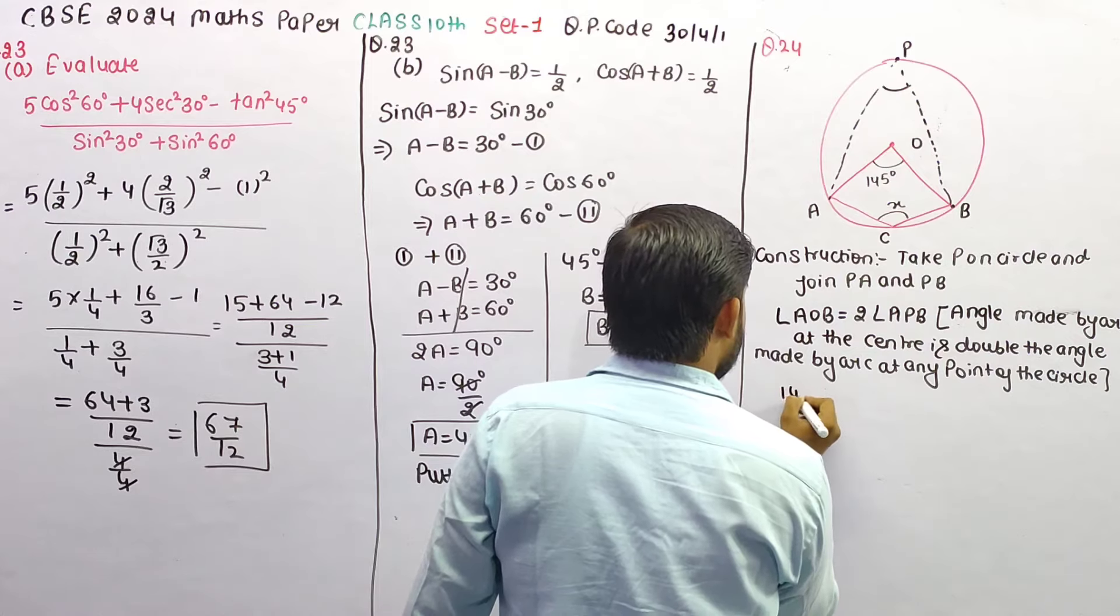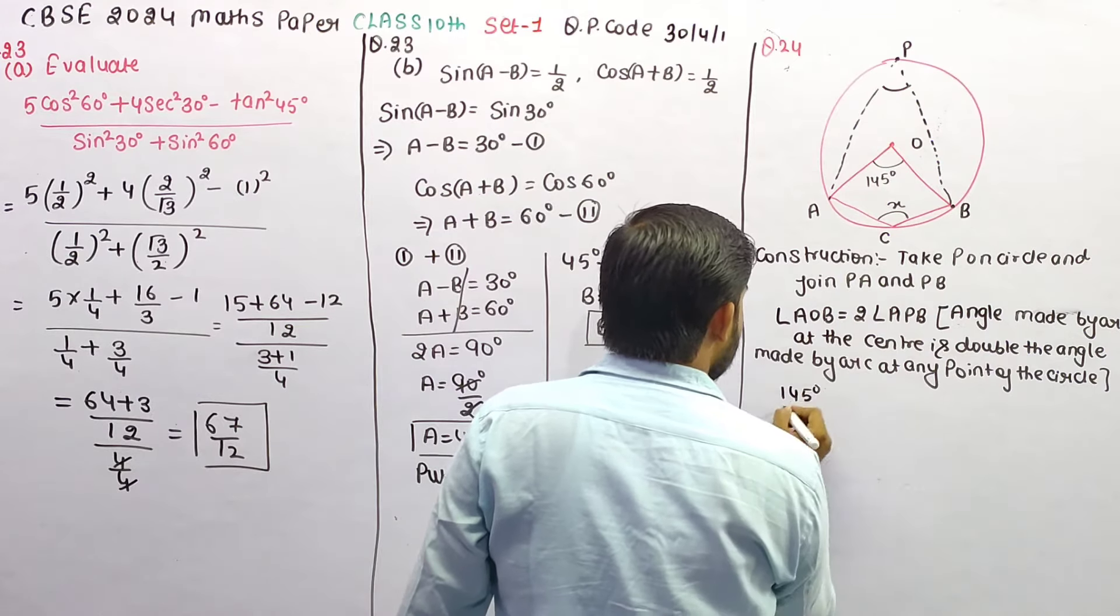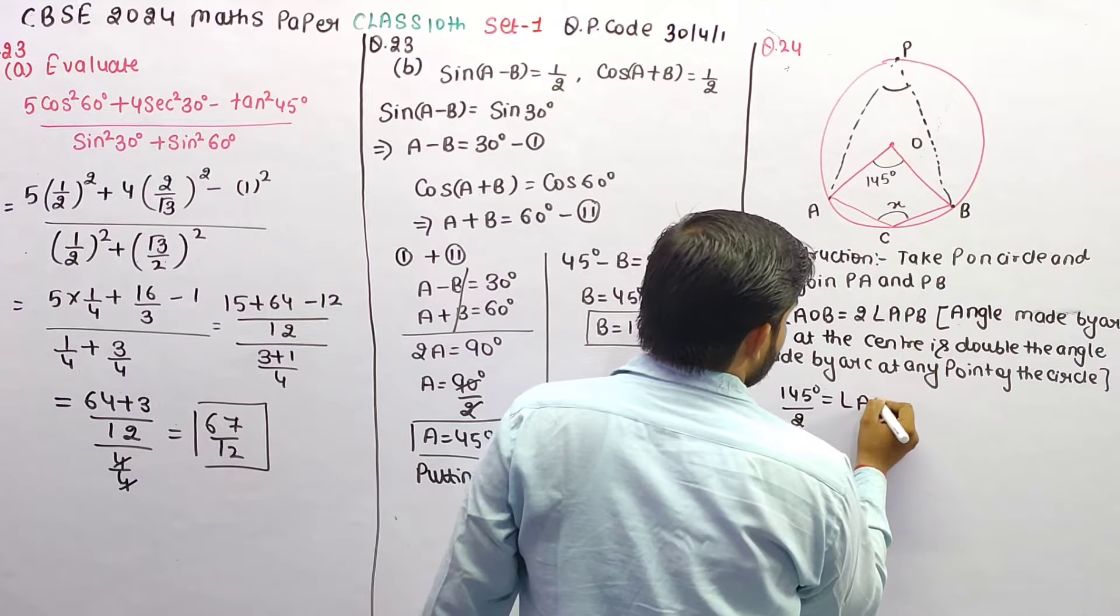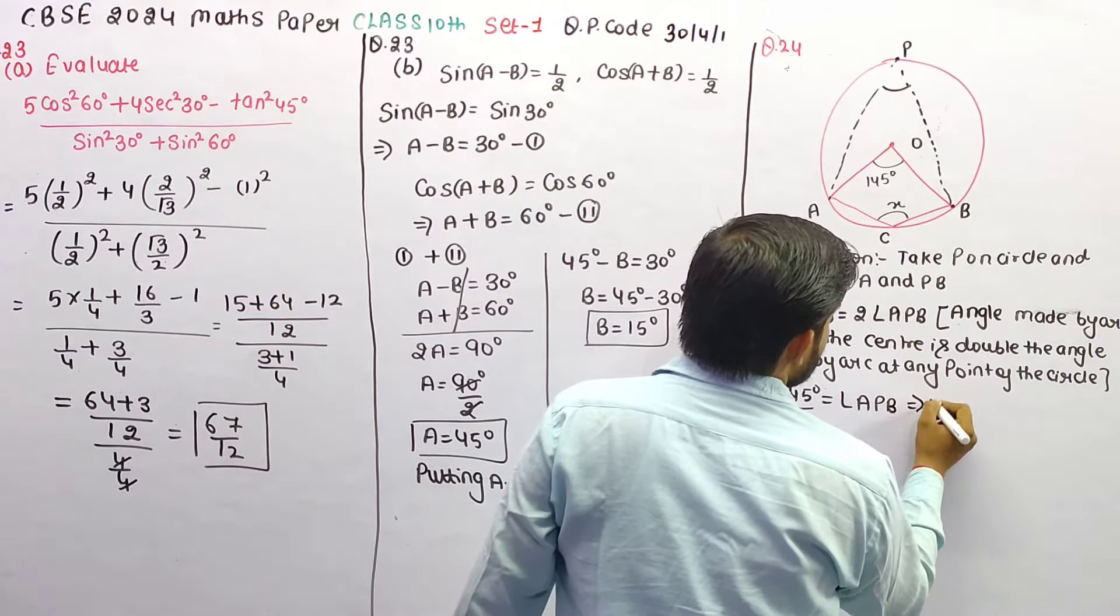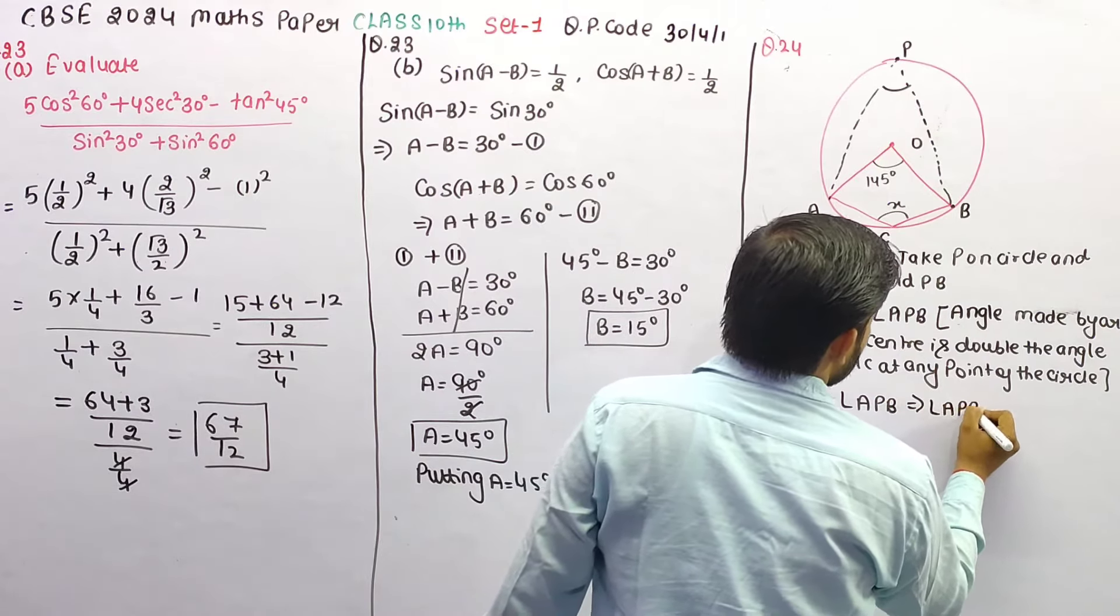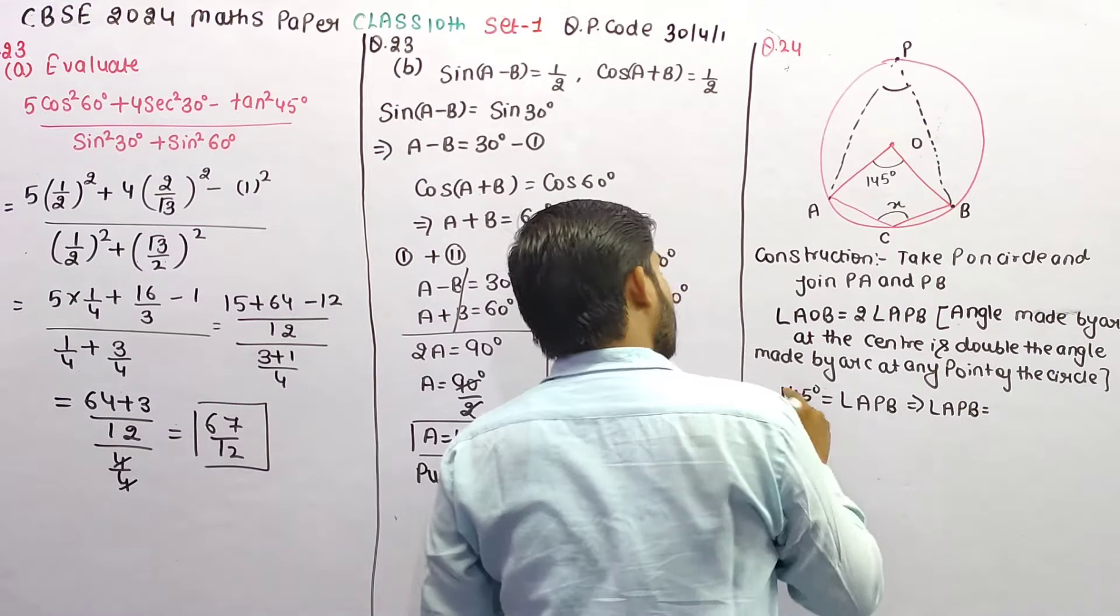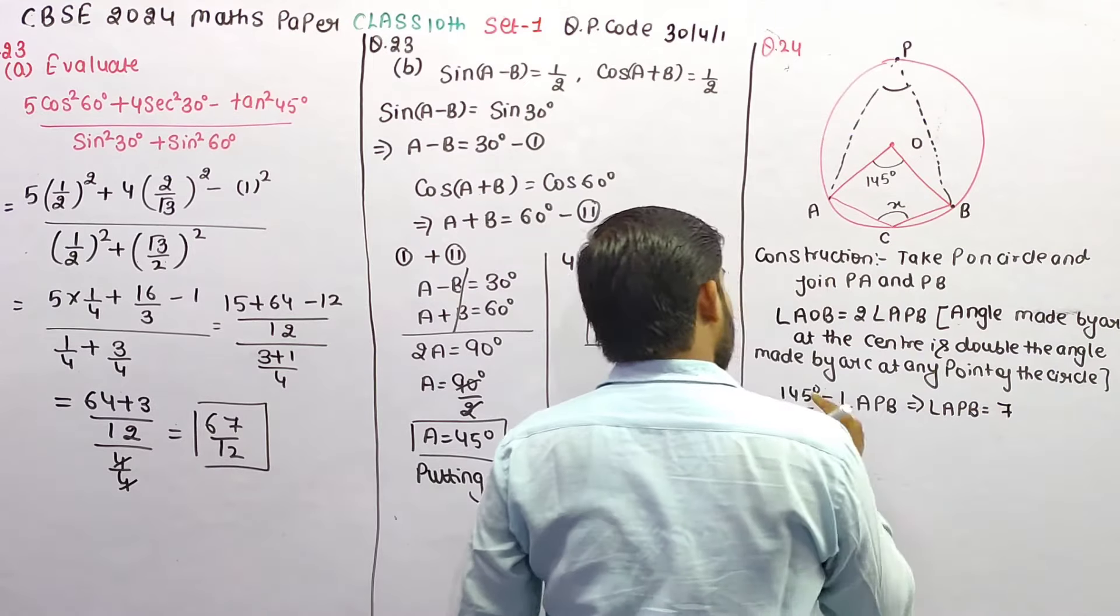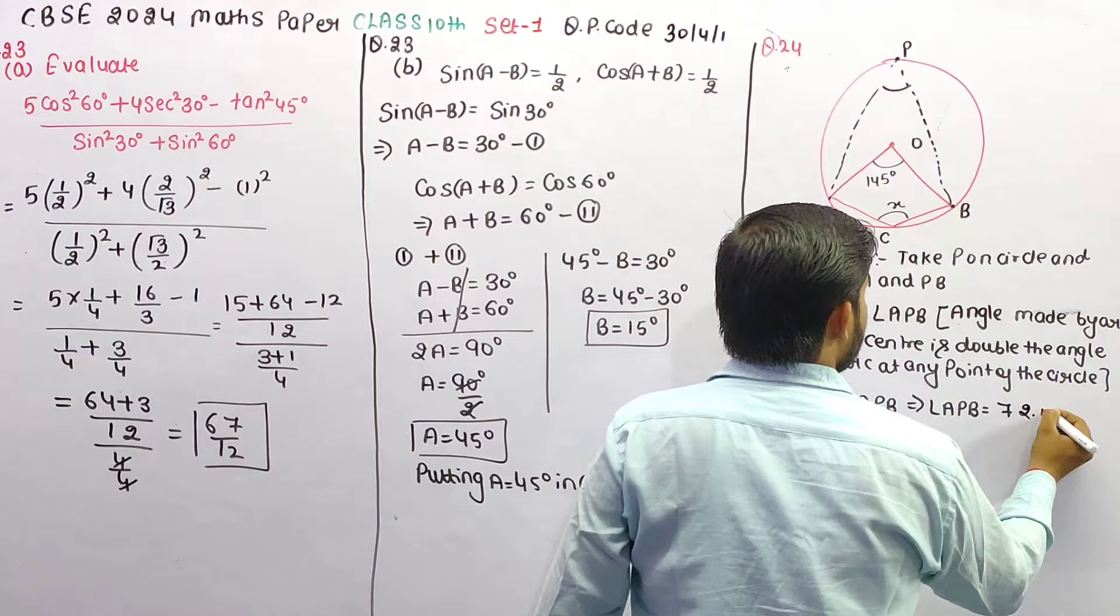AOB is given, that is 145 degree. So angle A, P, B, which implies angle APB, divide by 2 to get 72.5 degree.